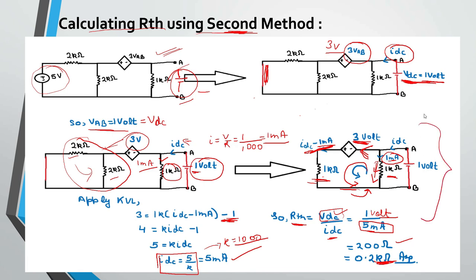You can solve this question by keeping VDC as a variable, but then there will be two unknowns and you might get confused. So we set VDC equal to 1V to simplify the answer. So these were the methods of calculating RTH.